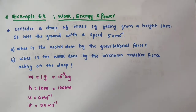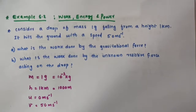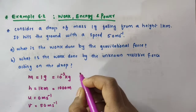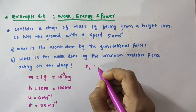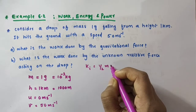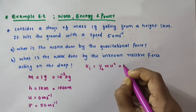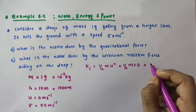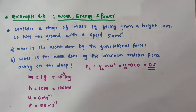What is the initial kinetic energy of the raindrop? The initial kinetic energy Ki equals half m times U squared. Since U is 0, U squared is 0, and 0 times any value gives 0. So the initial kinetic energy is 0 Joules.